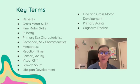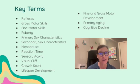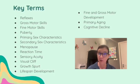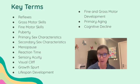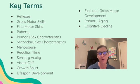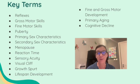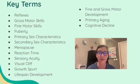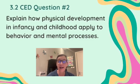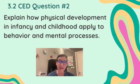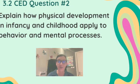On this slide, you're going to find all the key terms that you will need for 3.2 of unit three. I always do a separate video with the key terms, with the definitions and real life examples. You're going to hear some of these definitions when we talk about the essential knowledge, but it's really important for you to be able to write your flashcards with definitions and examples so that you can know them and apply them on test day. So CD question number two is: explain how physical development in infancy and childhood apply to behavior and mental processes.